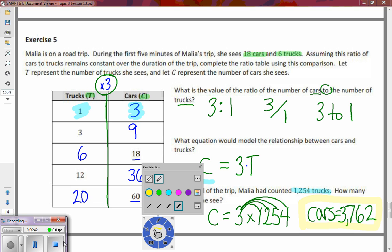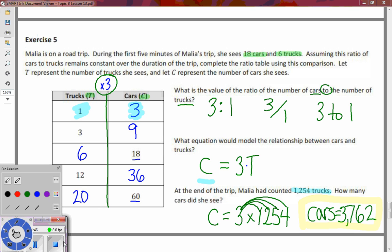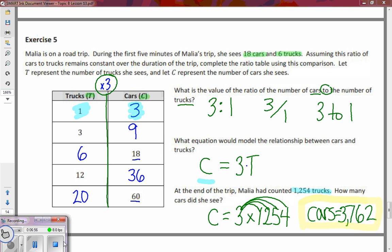So we have taken a ratio table and taken that information to find the value of the ratio, and in this case it wanted cars to trucks which is three to one. We realize to get cars we take three times the amount of trucks, and then we can substitute whatever information they give us. In the final problem they had us solve for one thousand two hundred fifty four trucks. So ratio tables to the value of the ratio, finding and making an equation, and solving that equation.